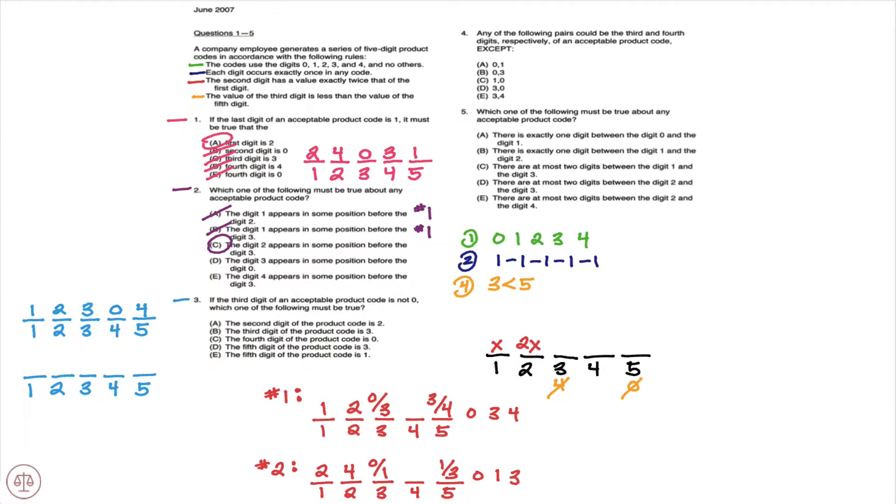What about for option two? In option two, our options for the third spot are zero and one. The stem from question three is telling us it's not zero, so it must be one. We know two and four now are going to be first and second. And we know that the third digit is less than the value of the fifth digit. The only two digits remaining are zero and three, which means three has to go fifth and zero comes fourth.